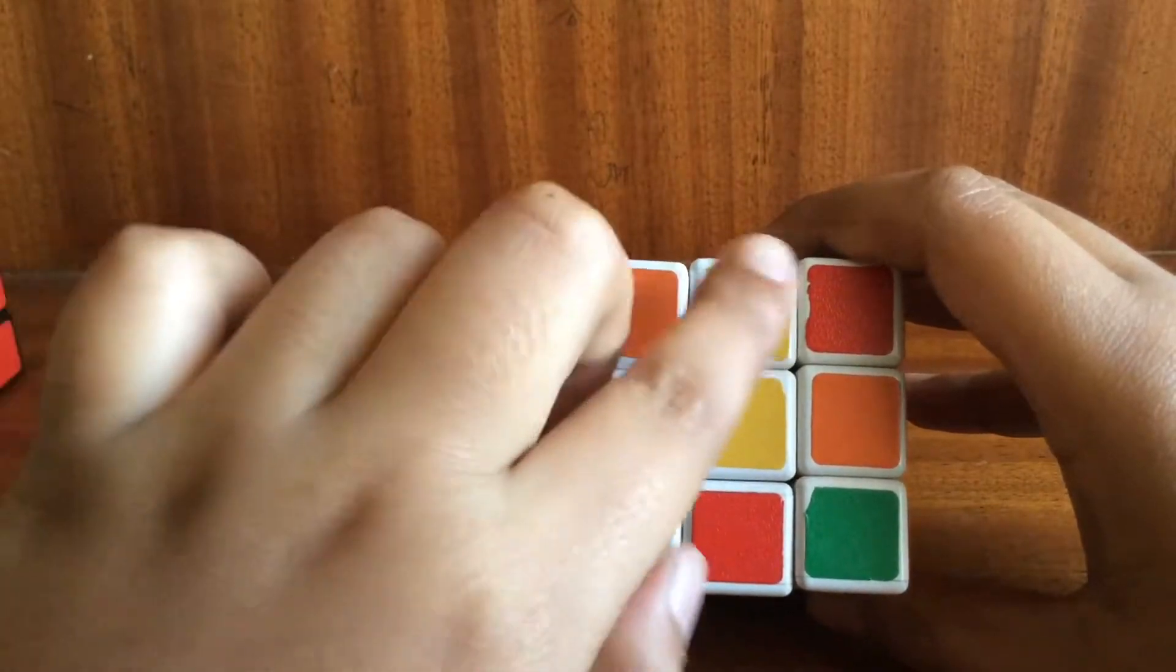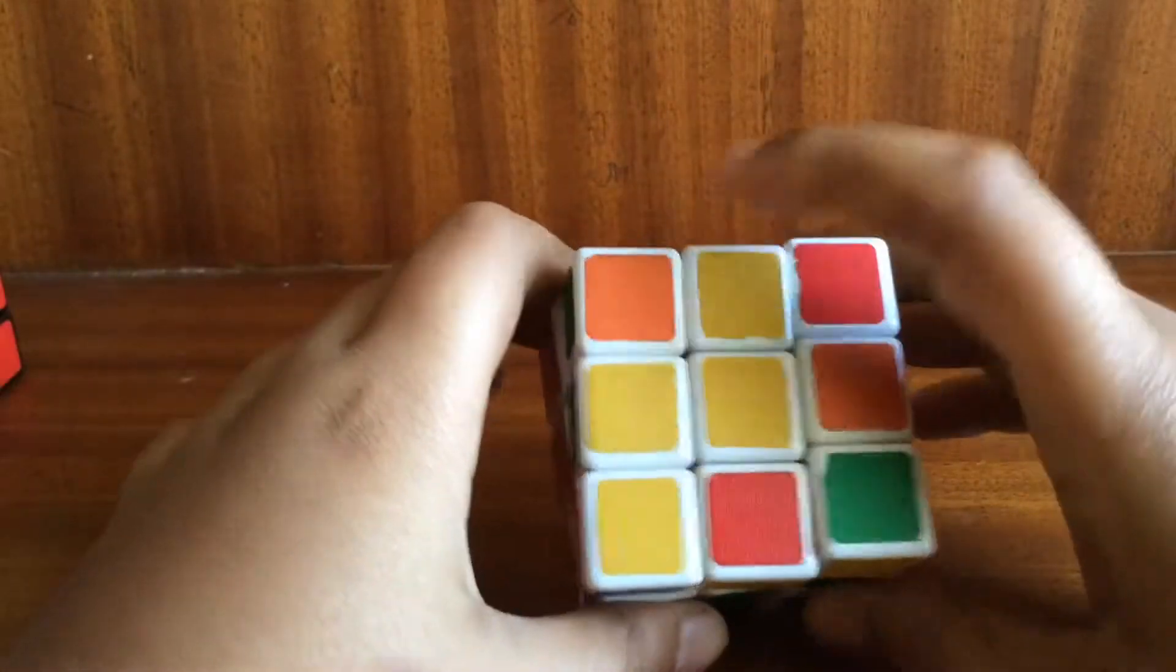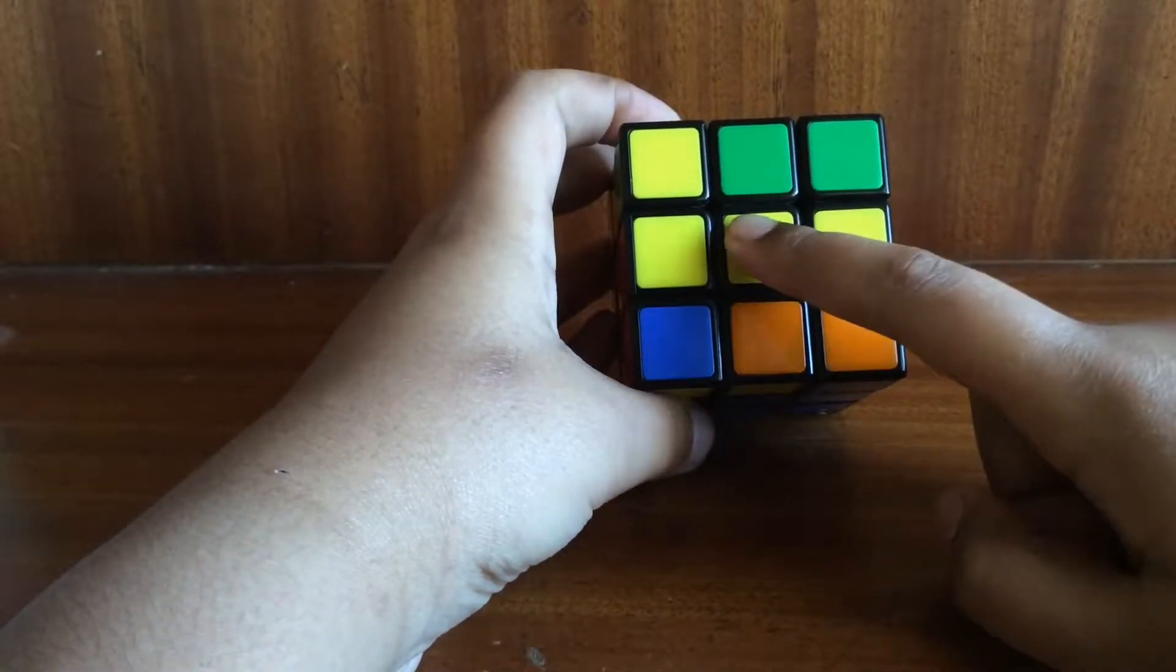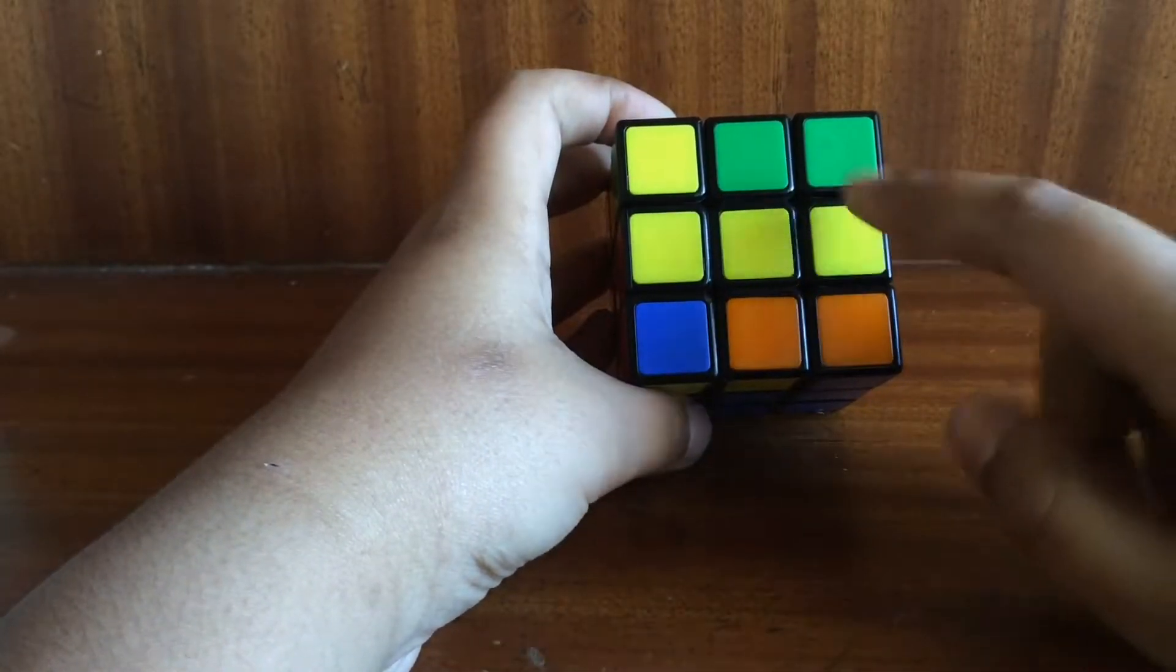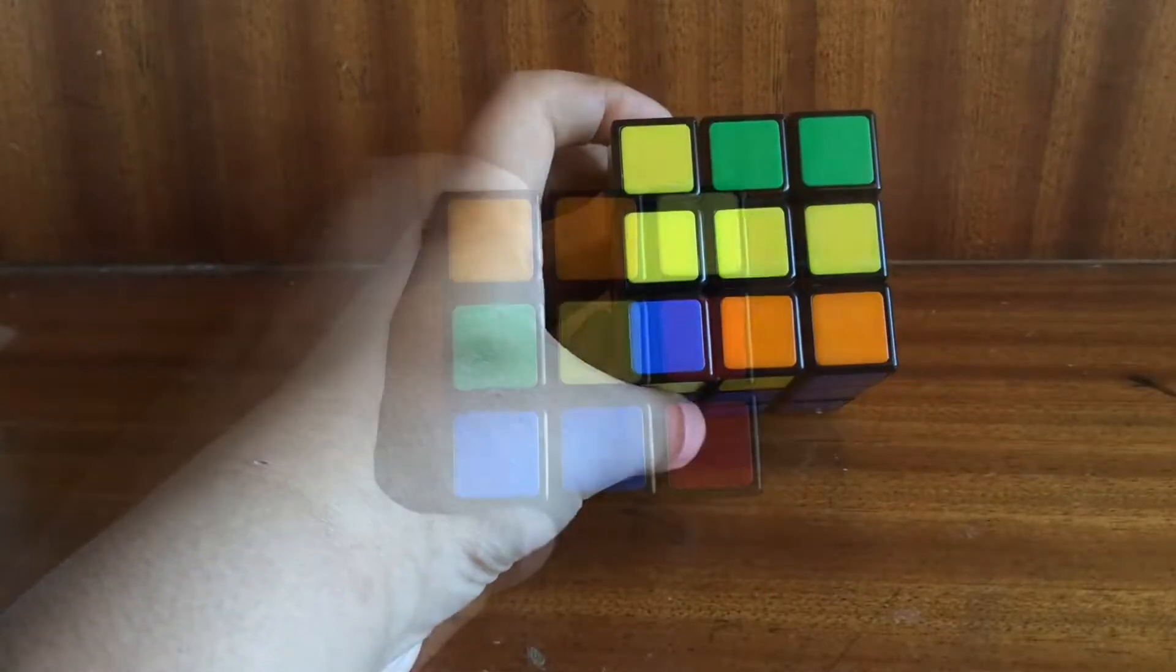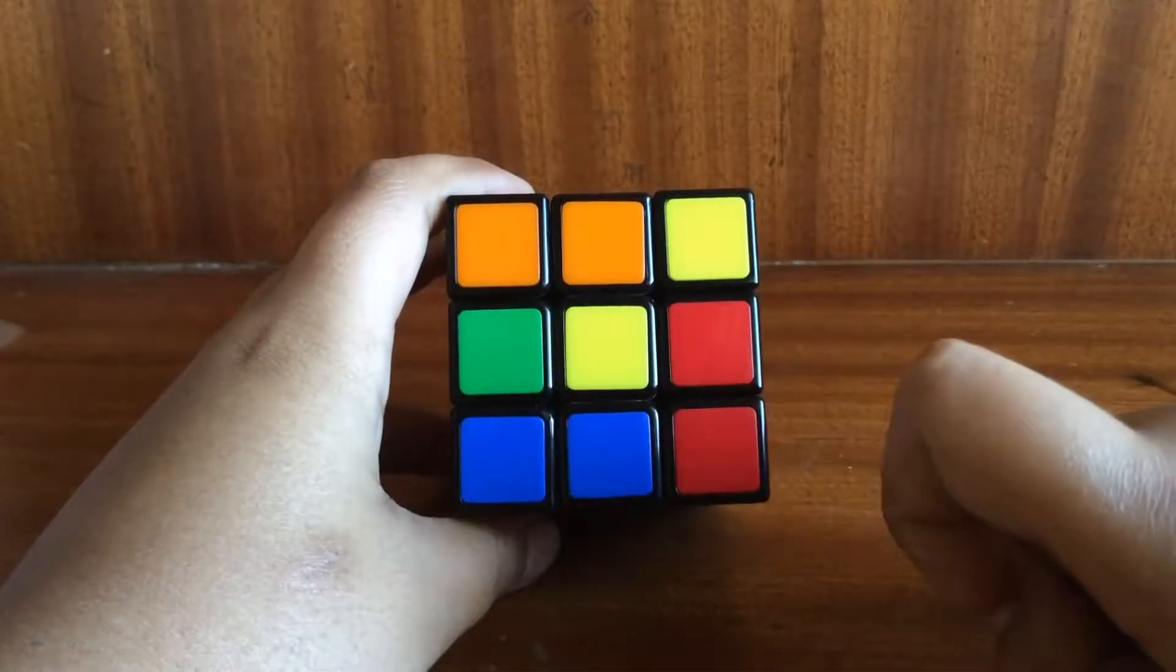So you can get this situation where with the front center piece there are two yellow edge pieces. Hold it horizontally facing up.